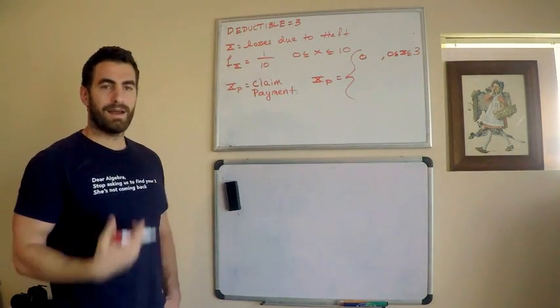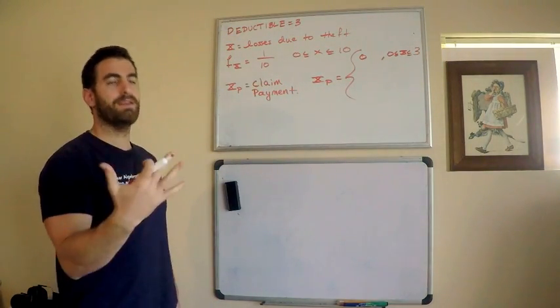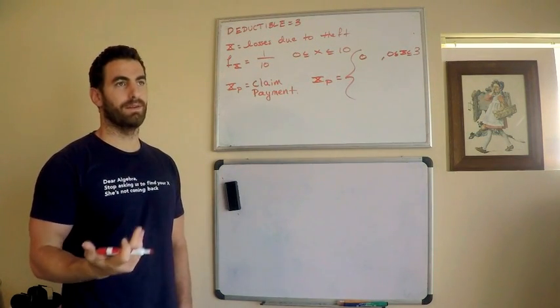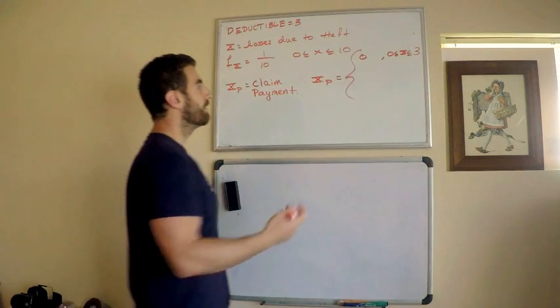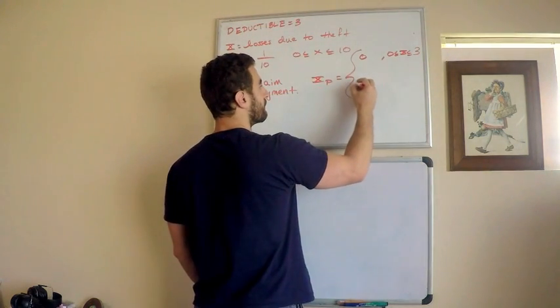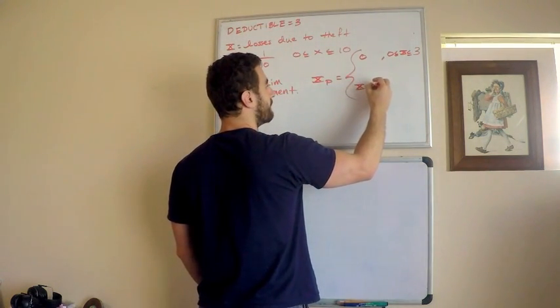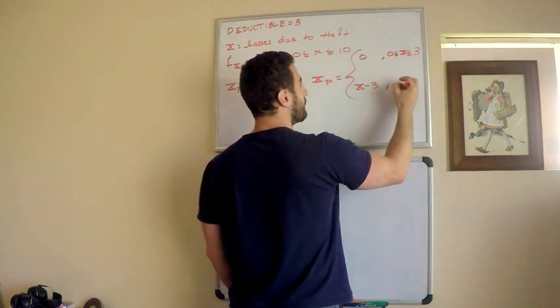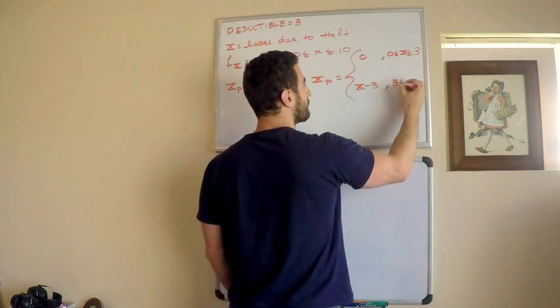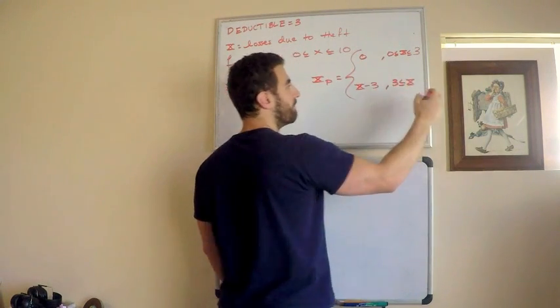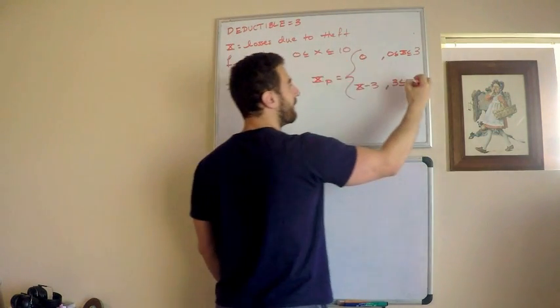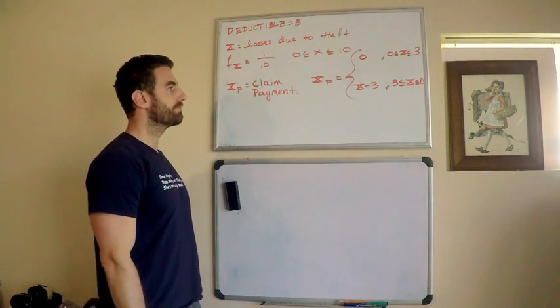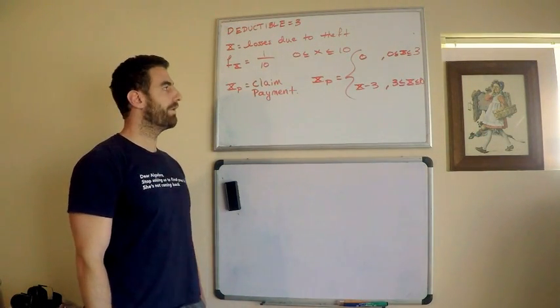When do I, the insurance company, pay you something? Well, I pay you the losses that exceed the deductible, right? I pay you the losses minus the deductible, if the losses exceed the deductible. If the losses exceed the deductible, my losses don't go any farther than ten, so I have that.